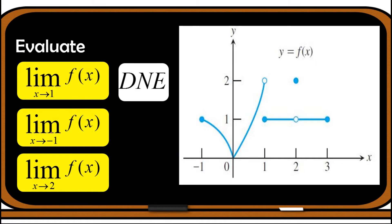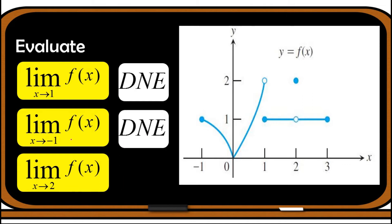Let us find the limit of the function as x approaches negative 1. This is negative 1 on x, and we need to look from the left and from the right. When we approach negative 1 from the left, there is no graph going to negative 1 — meaning the left-hand limit does not exist. When we approach negative 1 from the right, the graph approaches 1. Since the left-hand limit does not exist while the right-hand is equal to 1, the limit as x approaches negative 1 does not exist.